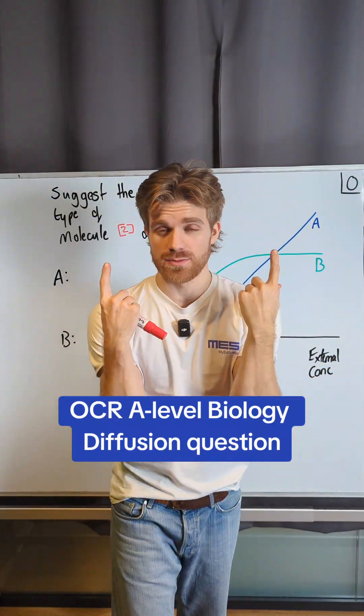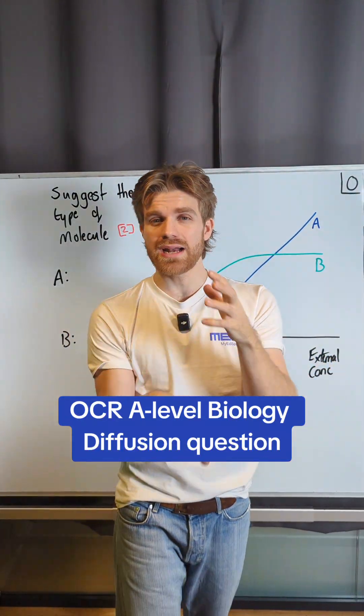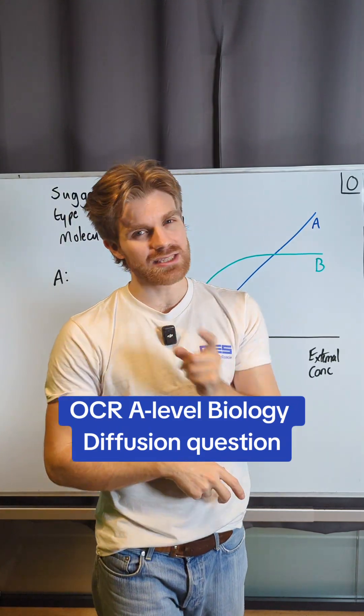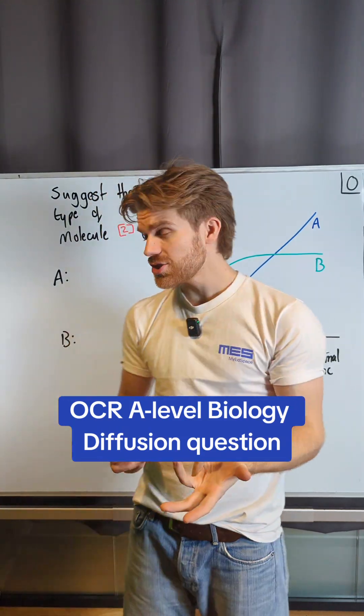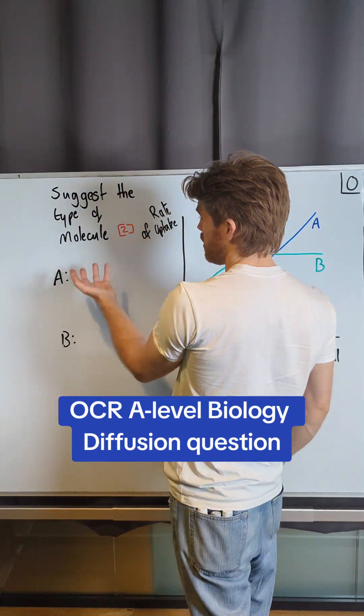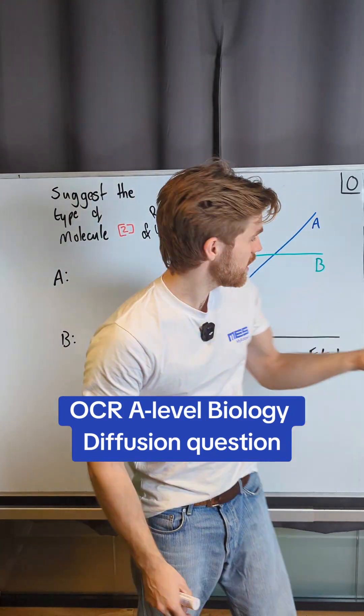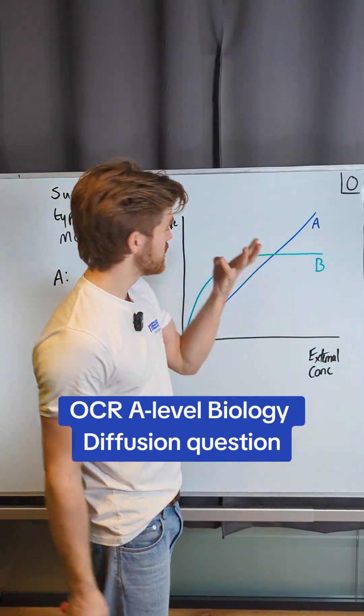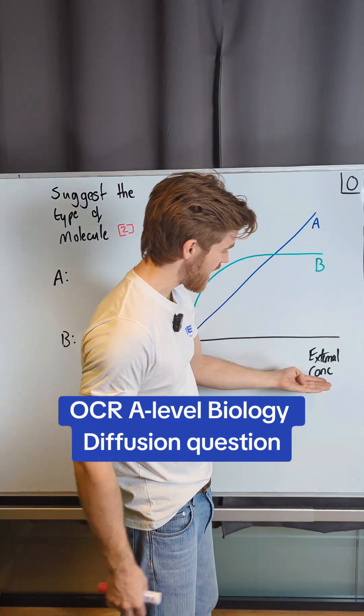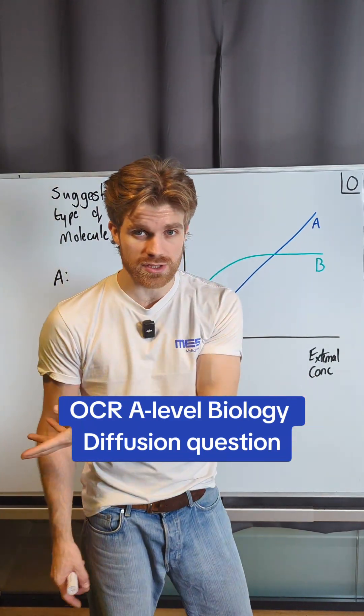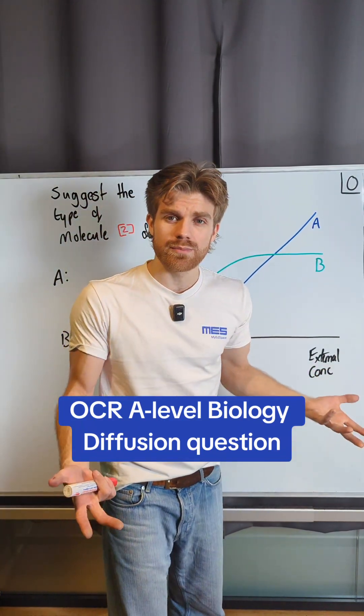On the surface, this question seems pretty simple, but when you start to dig into it, it actually becomes quite challenging. The question says suggest the type of molecule A and B, and we are given a graph to represent the rate of uptake depending on the external concentration of these two molecules. So where do we even begin?